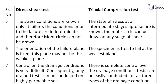In direct shear test, control on the drainage condition is very difficult. Consequently, only drained tests can be conducted on highly permeable soil, because in undrained tests, pore water pressure measurement is quite difficult. In triaxial compression test, there is complete control over drainage conditions, so this test can be easily conducted for all types of drainage conditions.